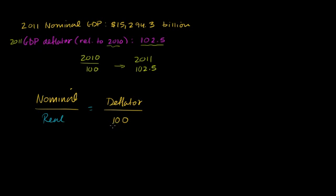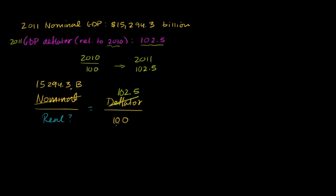You can view that as the deflator in 2010 being set to 100, and our prices now being 102.5. Our nominal current dollar GDP is $15,294.3 billion. Our real GDP is what we want to figure out, and we know our deflator — that things have gotten 2.5% more expensive, or that our deflator is 102.5. We can solve for the real GDP. The 102.5 over 100 just becomes 1.025. So we have 15-point-something trillion divided by real GDP equals 1.025. We can divide both sides by 1.025 and multiply both sides by the real GDP.